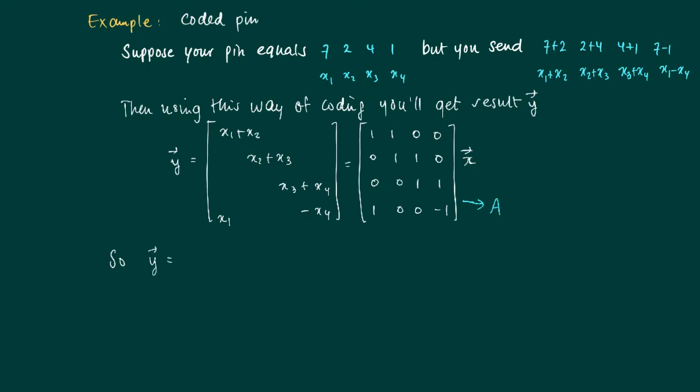So this matrix we will denote by A. So actually this is a linear encoding in the sense that we obtain y as a transformation of x. And a linear transformation of x which is done by left multiplication by a matrix A.